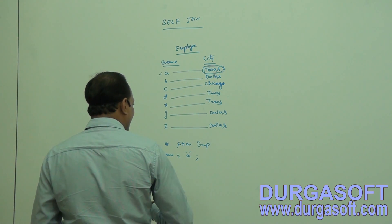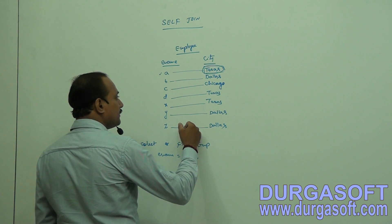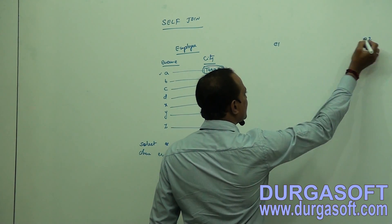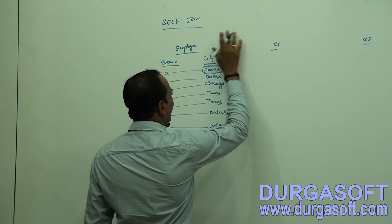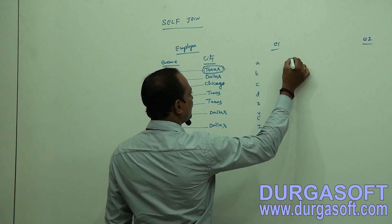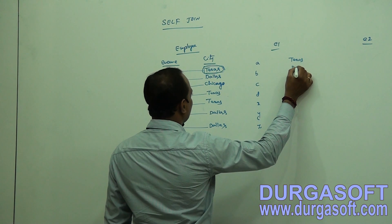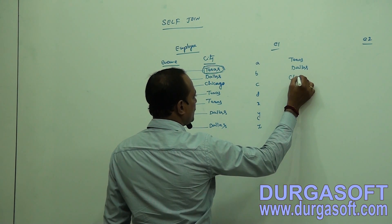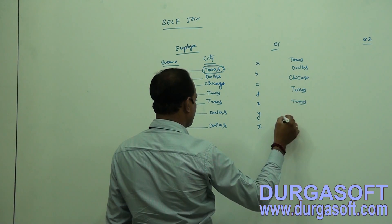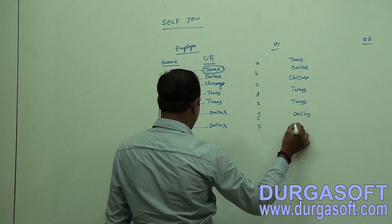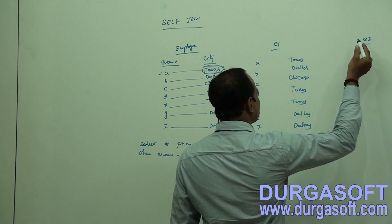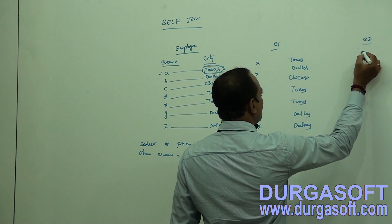In that case, we have to go for self-join. In self-join, we need to consider two alias tables for the same table — E1 and E2 for the same employee table. Whenever you maintain one alias name, the alias name maintains a temporary copy of the same table.